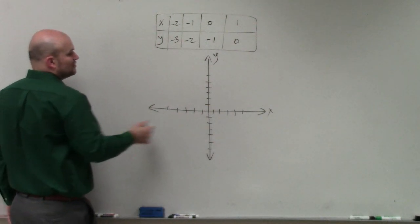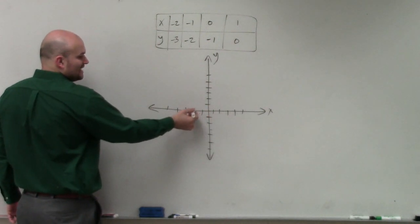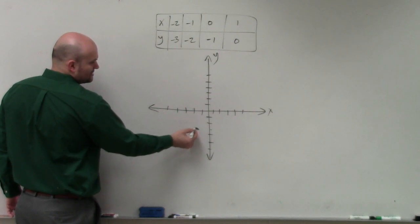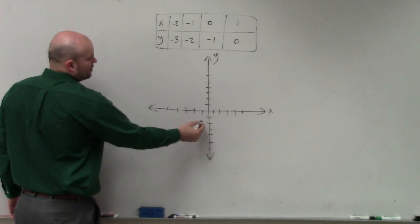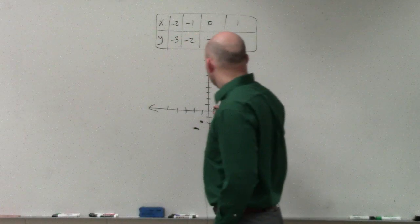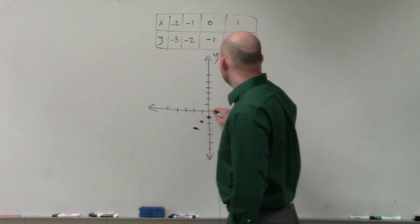So therefore, x is negative 2, y is negative 3. So I go left 2 on the x-axis, down 3 on the y-axis, and you make a point. Down 1, or left 1, down 2. Then I have 0, negative 1, and then I have 1, comma 0.